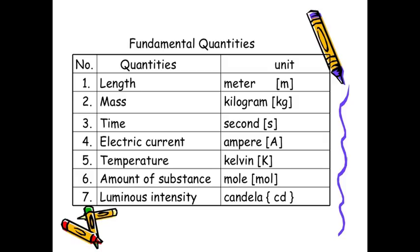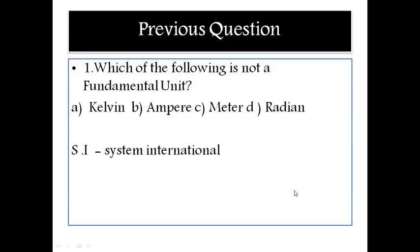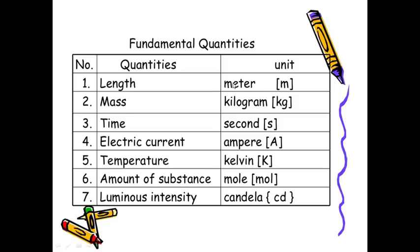There are only seven fundamental units — all remaining units are derived from these seven. So keep in mind: meter, kilogram, second, ampere, Kelvin, mole, candela. Now, back to the question: Kelvin is fundamental, Ampere is fundamental, Meter is fundamental — but Radian is not a fundamental unit. So the answer is D.